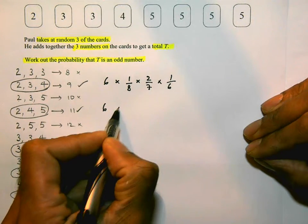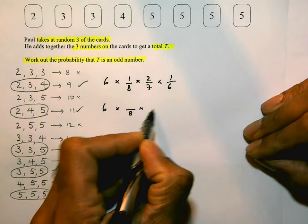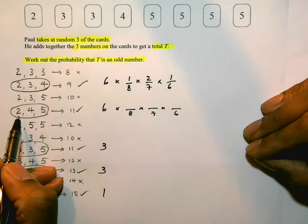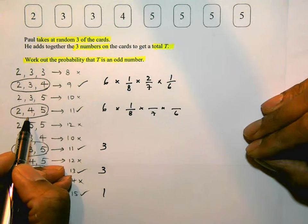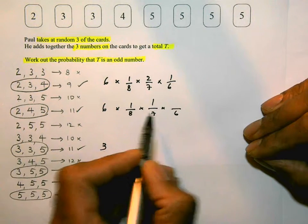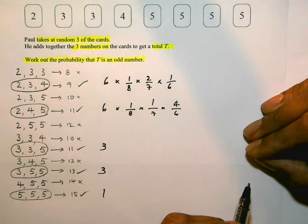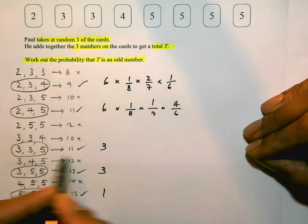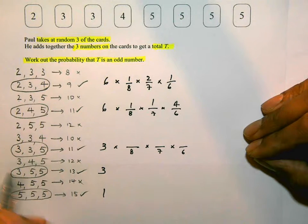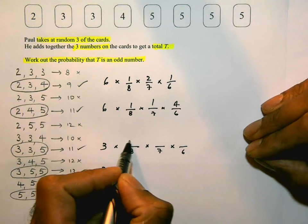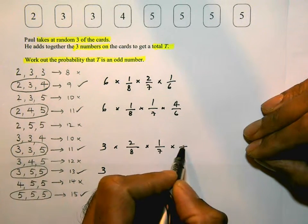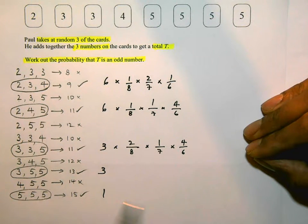The rest follow a similar pattern: the first card is out of 8, the second out of 7, and the third out of 6 because we're not replacing them. For picking 2, 4, and 5: probability of 2 is 1/8, probability of 4 is 1/7, and probability of 5 — there are 4 of them — is 4/6. For picking 3, 3, and 5: the denominators follow the same pattern. Probability of first 3 is 2/8, second 3 is 1/7, and 5 is 4/6.